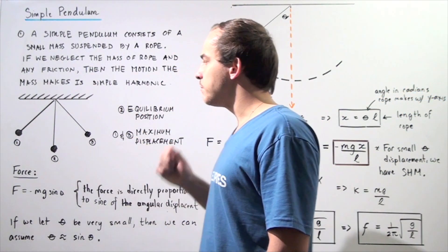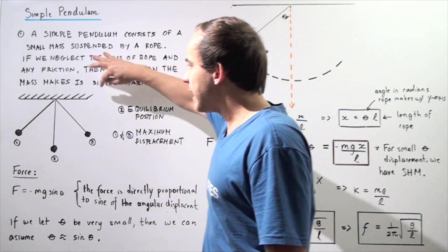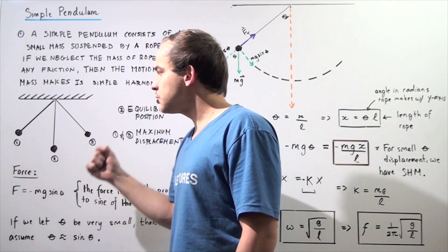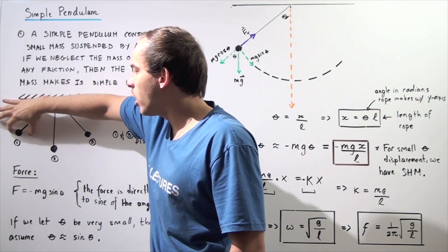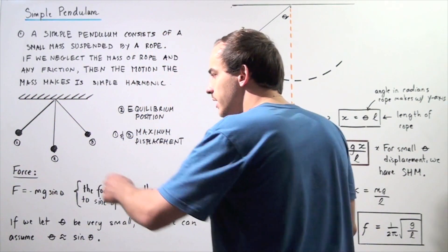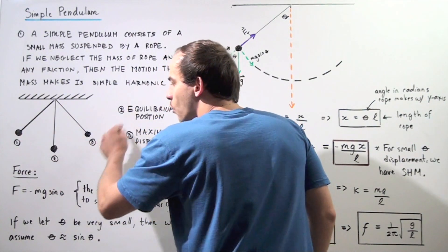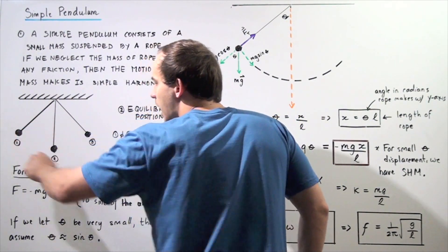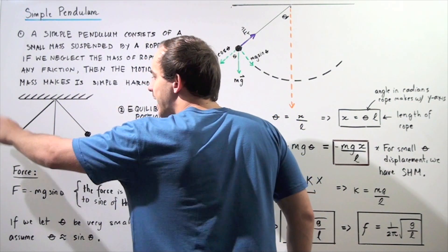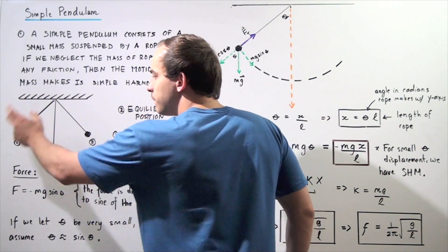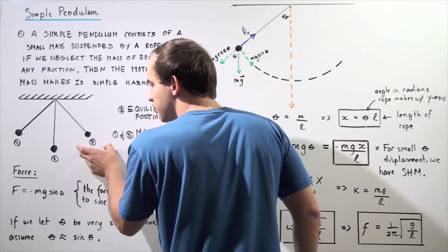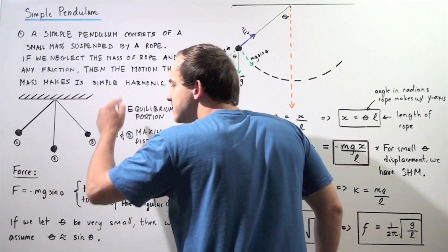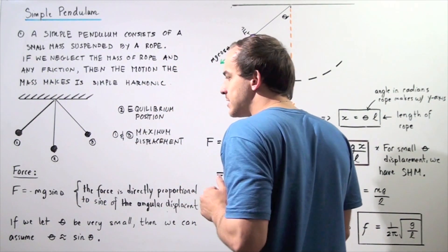Let's look at our simple pendulum diagram. We have the ceiling, we have the rope, and we have our mass. Suppose we begin at position one — we move our mass to position one and let go. Our mass will begin to swing back and forth, and as long as we neglect friction and the mass of our chord, the object will continue swinging back and forth endlessly. It will move from position one to position two, to position three, back to position two, and finally back to position one. This is one full cycle of our oscillation.